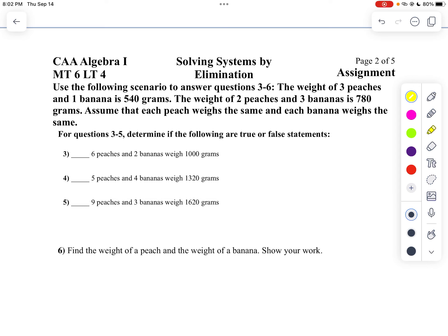On the next problem, we've got the weight of three peaches and one banana is 540. So I think we can write an equation based on that. I'll use P for peaches. So three peaches plus one banana equals 540.